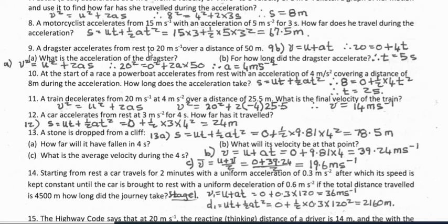Question 9: a dragster accelerates from rest at 20 meters per second over a distance of 50 meters — what is the acceleration? Using v² = u² + 2as: 20² equals 0 plus 2a times 50, giving acceleration equals 4 meters per second squared. When using SUVAT equations, always choose the one where you have all the variables except the one you're solving for. Part B: for how long did the dragster accelerate? Using v = u + at: 20 equals 0 plus 4t, so time equals 5 seconds.